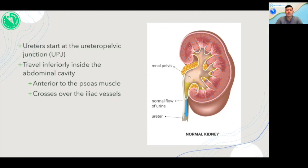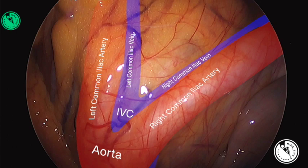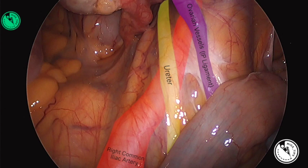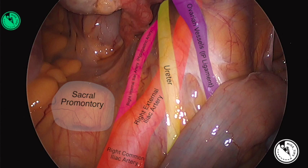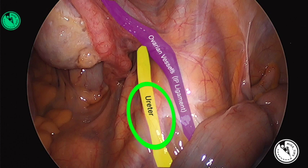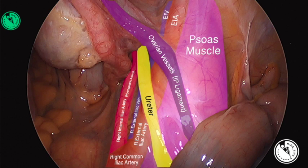Ureter path. The ureter starts at the ureteropelvic junction, or the UPJ, and travels inferiorly inside the abdominal cavity, entering the psoas muscle, and crossing over the iliac vessels. The path of the ureter is along the anterior edge of the psoas muscle in close proximity to the gonadal vessels. Note that the ureter is most superficial and easily visualized at the point crossing over the iliac vessels. If you are having issues visualizing the ureter, always consider locating it at a more cephalad location.